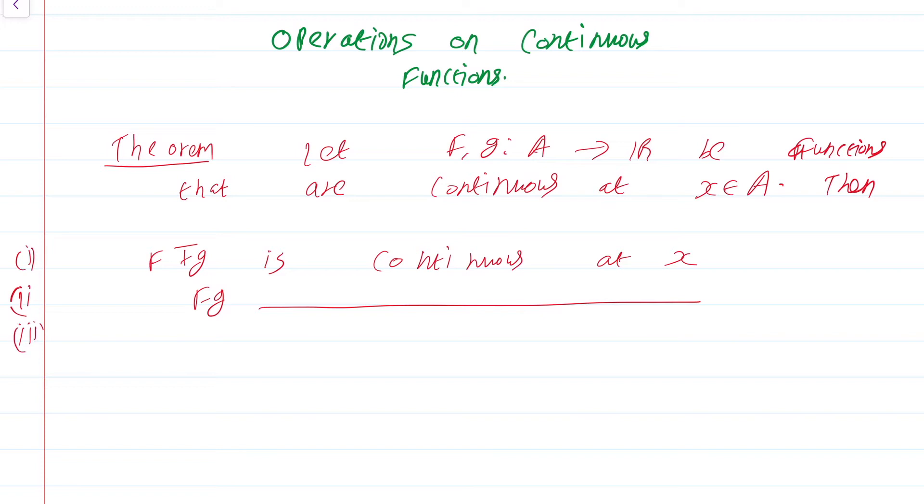Number 3, cf is continuous at x where c is a real number. Then number 4, f by g is continuous at x, provided g is not equal to 0 on A.